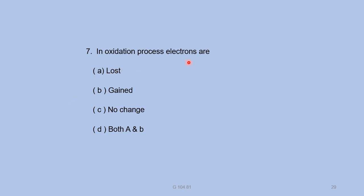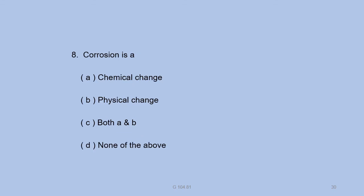In the oxidation process, electrons are A — lost. Corrosion is A — a chemical change. These multiple choice questions cover the key concepts discussed in this video lesson.